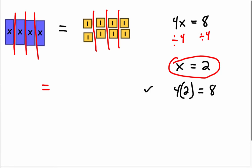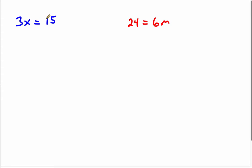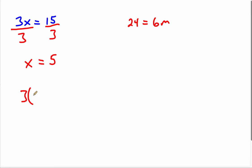Let's move on and try another. Here's another equation: three x equals 15. We're going to use the division property of equality because x is being multiplied by three, so we can counteract that by dividing by three. The division property of equality states that we have to do the same thing to both sides. We get x because three divided by three is one, so x equals five. We can check our answer: three times five equals 15. That's true.